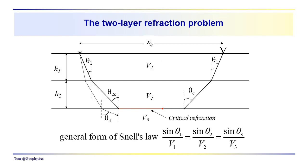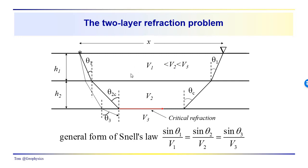Let's take a look at the two-layer critical refraction problem. We have three layers actually. The bottom of the third layer isn't shown — it's not relevant to the problem. We have these three layers with velocities v1, v2, and v3, and we're dealing with a special case where v1 is less than v2 is less than v3, so we have velocities increasing with depth from layer to layer.